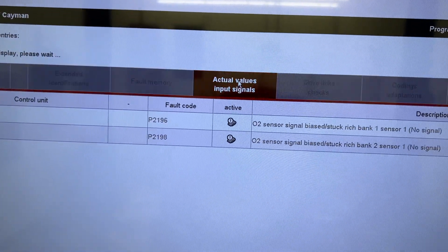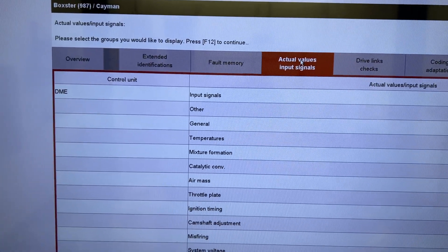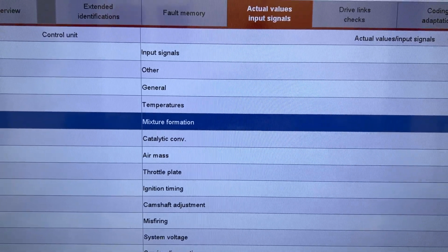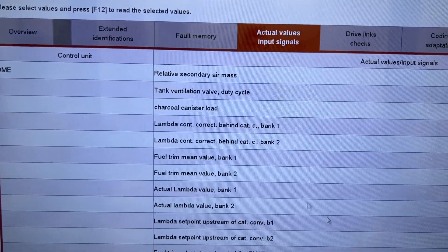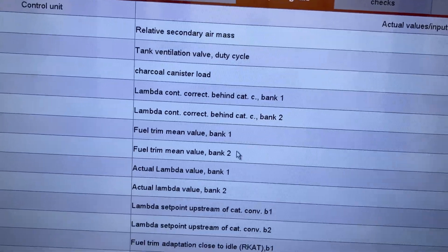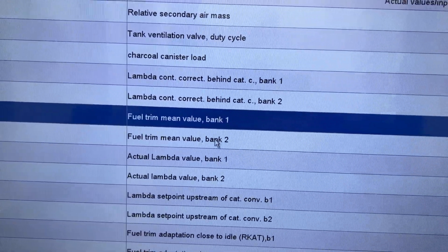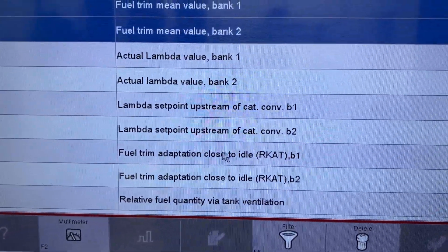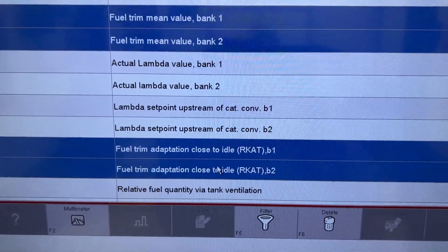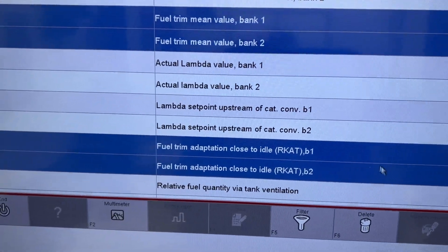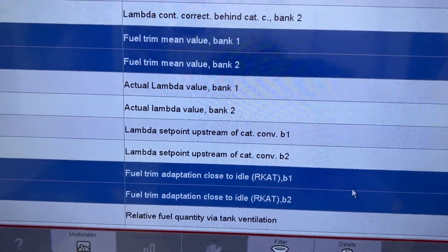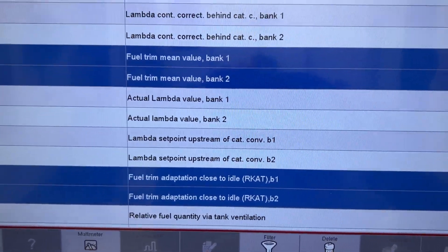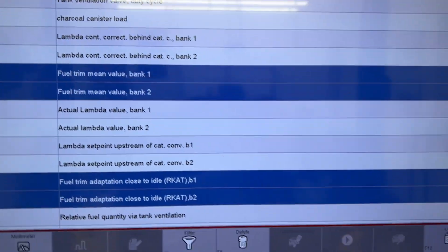All right, so before deleting these, I'm just going to go to my actual values right here. And we are still on the DME, and mine are, if I remember correctly, under the mixture formation. Let's click on next. Yes. All right, so this fuel trim mean value bank one and bank two are the short-term fuel trims that we just talked about for bank one and bank two. And the fuel trim adaptation close to idle is the RCAT values that we were just talking about. B1 for bank one, B2 for bank two. So yeah, each bank is monitored and adjusted separately. And yeah, adaptation is a very good word for it because it's going to adapt this value over time and be used like we mentioned.